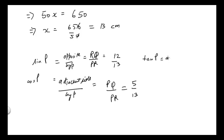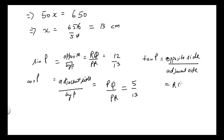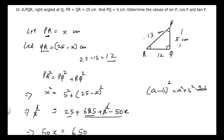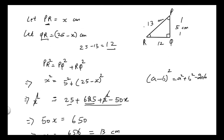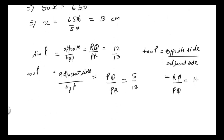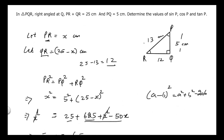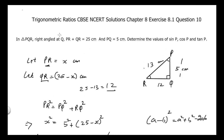Tangent P equals opposite side divided by adjacent side. The opposite side to angle P is RQ and the adjacent side is PQ, so tangent P equals 12 divided by 5. These are the values of sine P, cosine P, and tangent P for this trigonometric ratios problem.